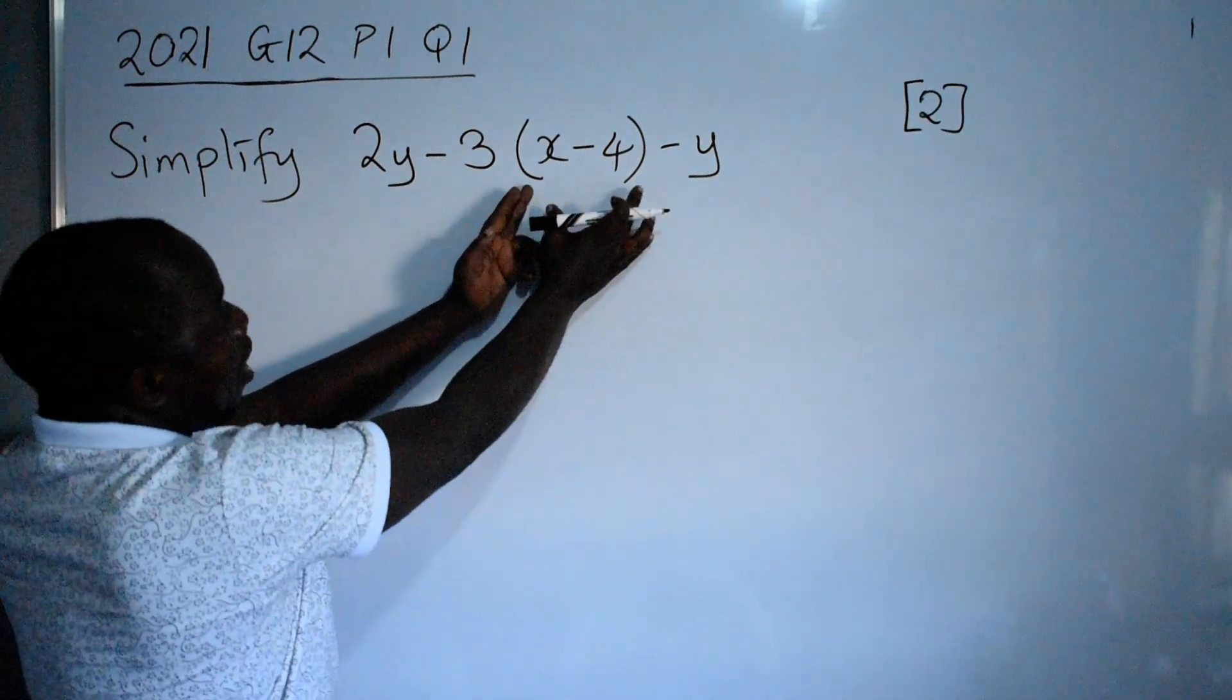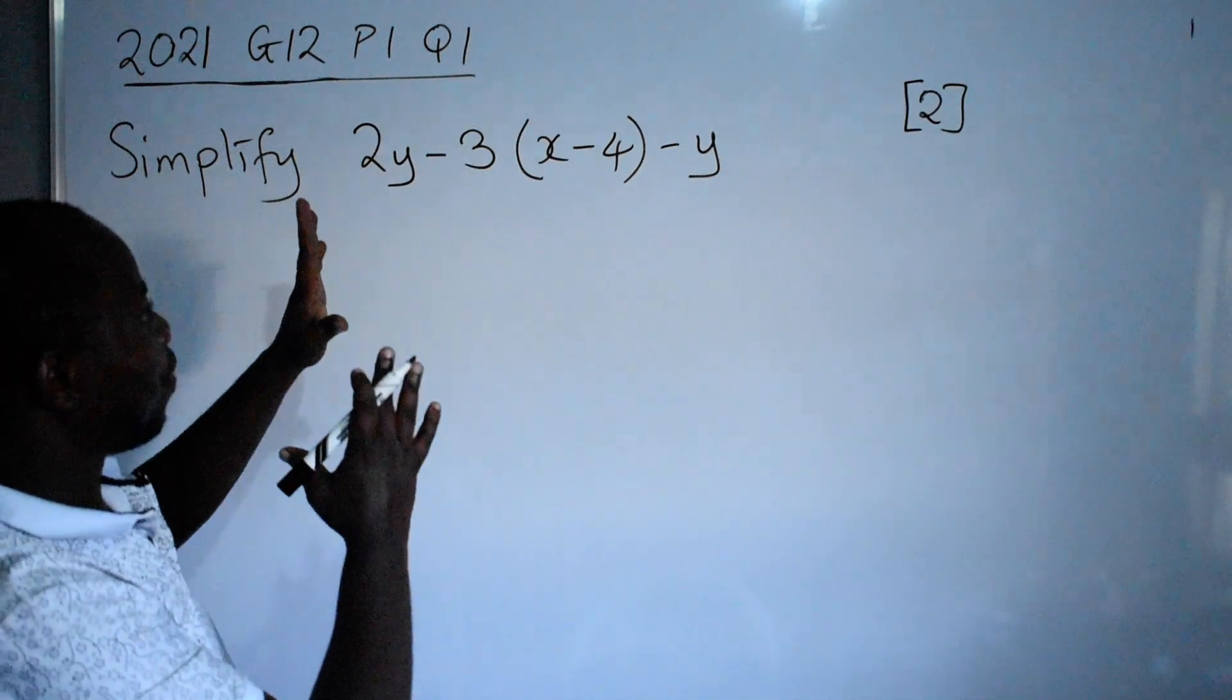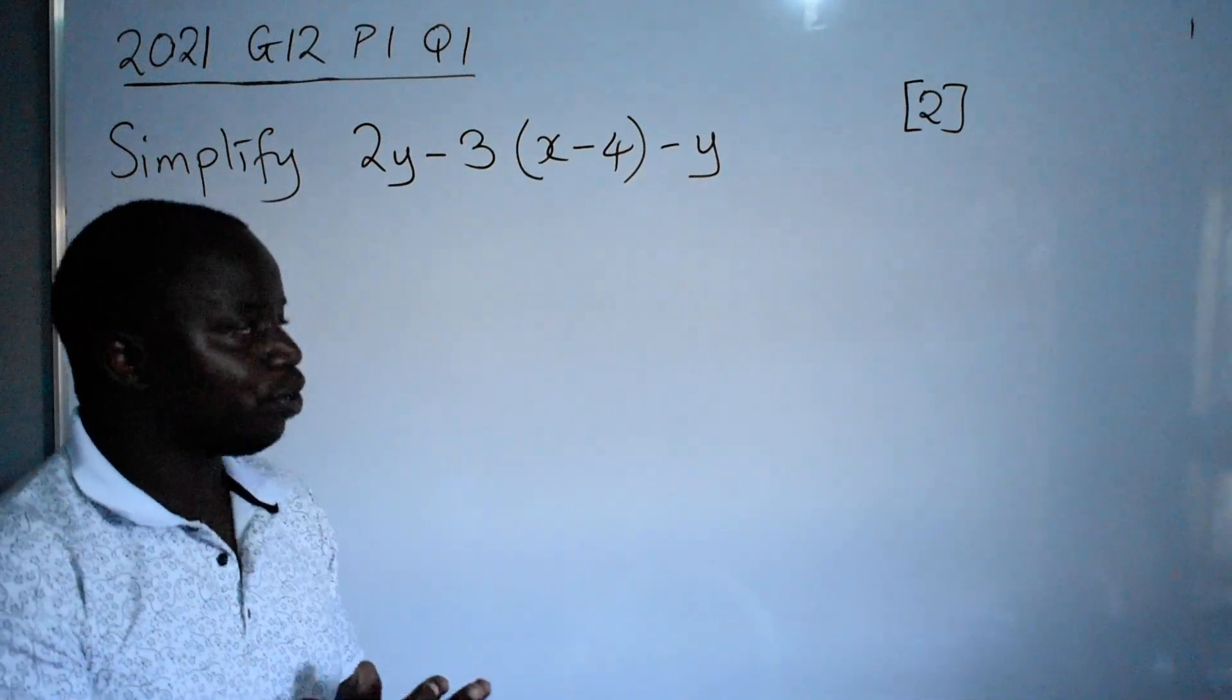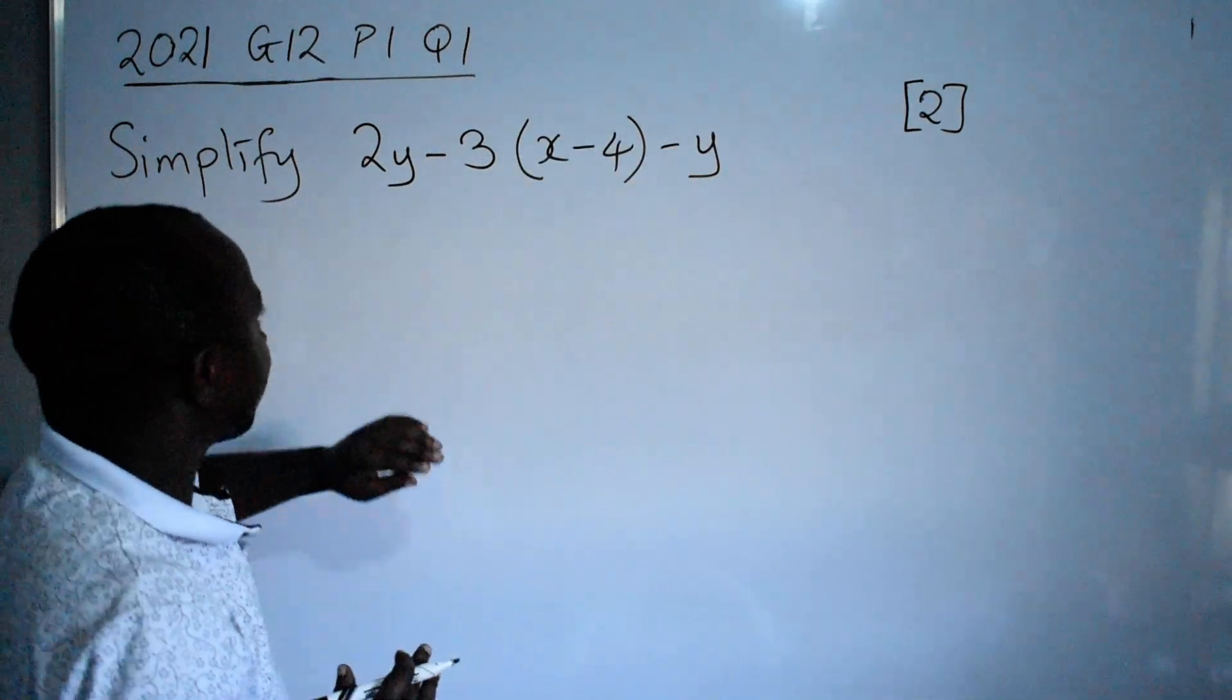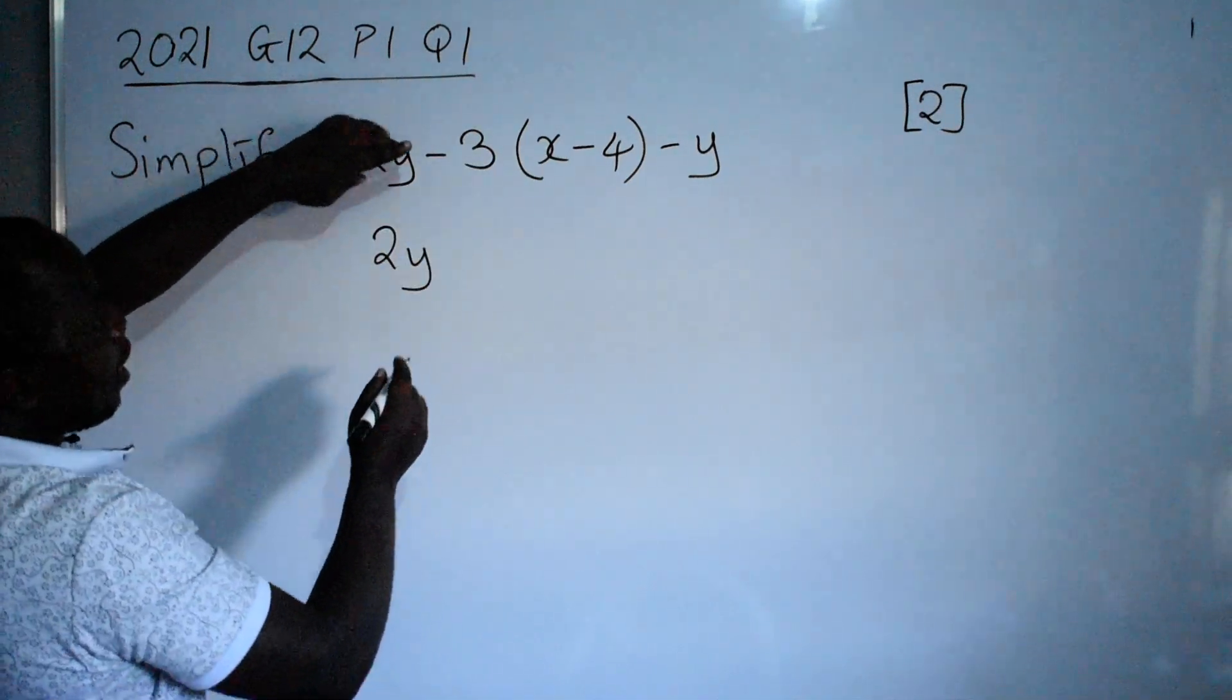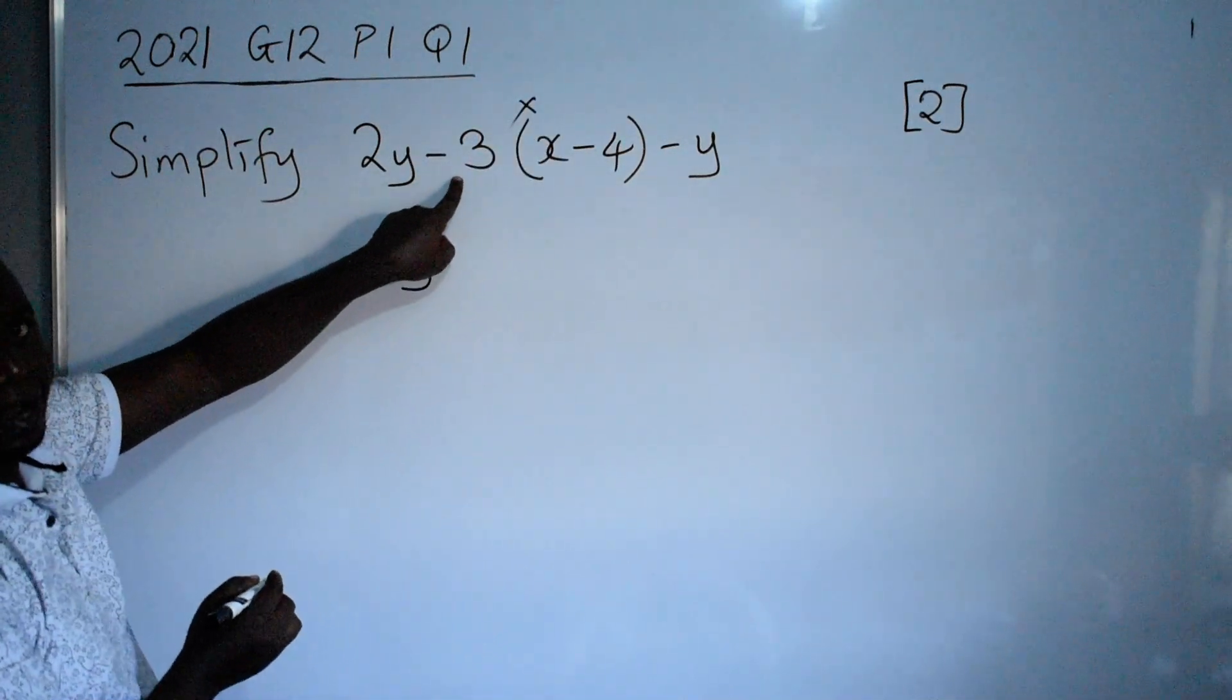Alright, so we have brackets. The moment you identify that in your algebraic expressions there are brackets, start from there so that we get rid of the brackets. So this side you are going to copy the way it is to 2y. Then to get rid of the brackets you have to multiply by the outside number.